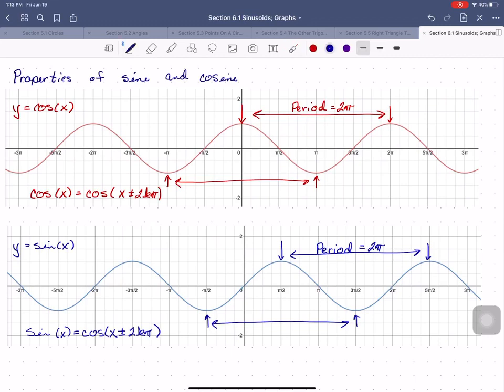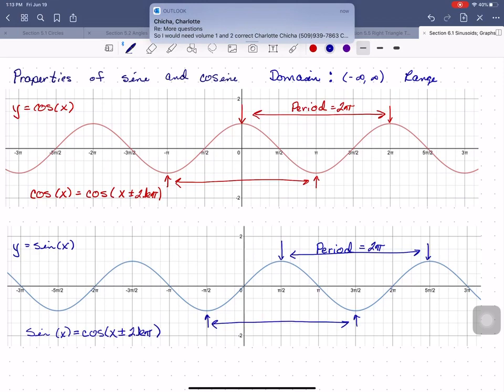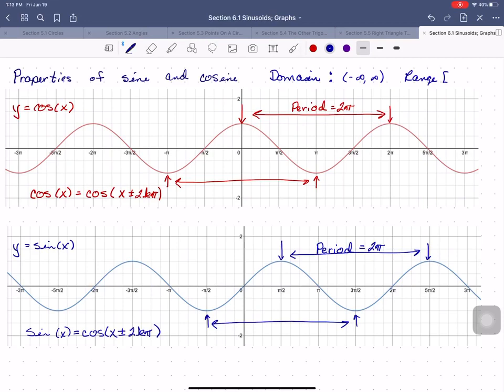Both functions have the same domain and range. The domain for both sine and cosine is all real numbers, meaning we can plug any x in and get a valid result out. The range for both sine and cosine—and remember range is the range of y values the function can take on—is negative 1 to 1.